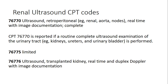The limited code 76775 is used when anything is missing — for example, if the urinary bladder or one kidney is not documented, or any renal condition is absent, you can code the limited code 76775 directly. Code 76776 is very rarely used; it is for ultrasound of a transplanted kidney with real-time and duplex Doppler with image documentation. It is straightforward — if the ultrasound is done on a transplanted kidney, you code 76776.